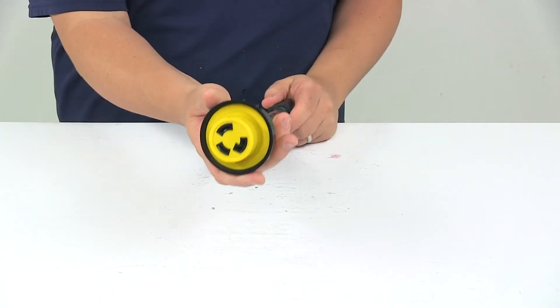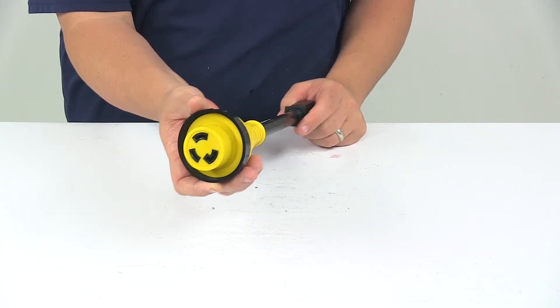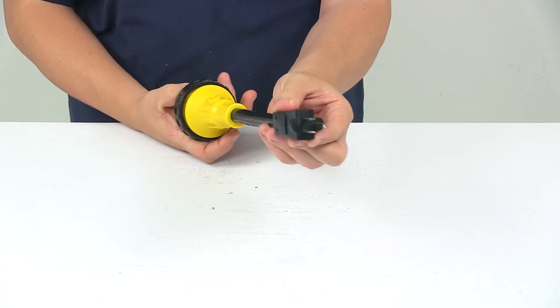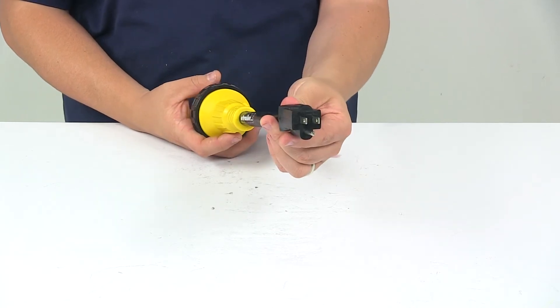The female plug connects to the 30 amp twist lock power inlet on your RV and then the male plug connects to a 15 amp extension cord that can be run to an electrical hookup.